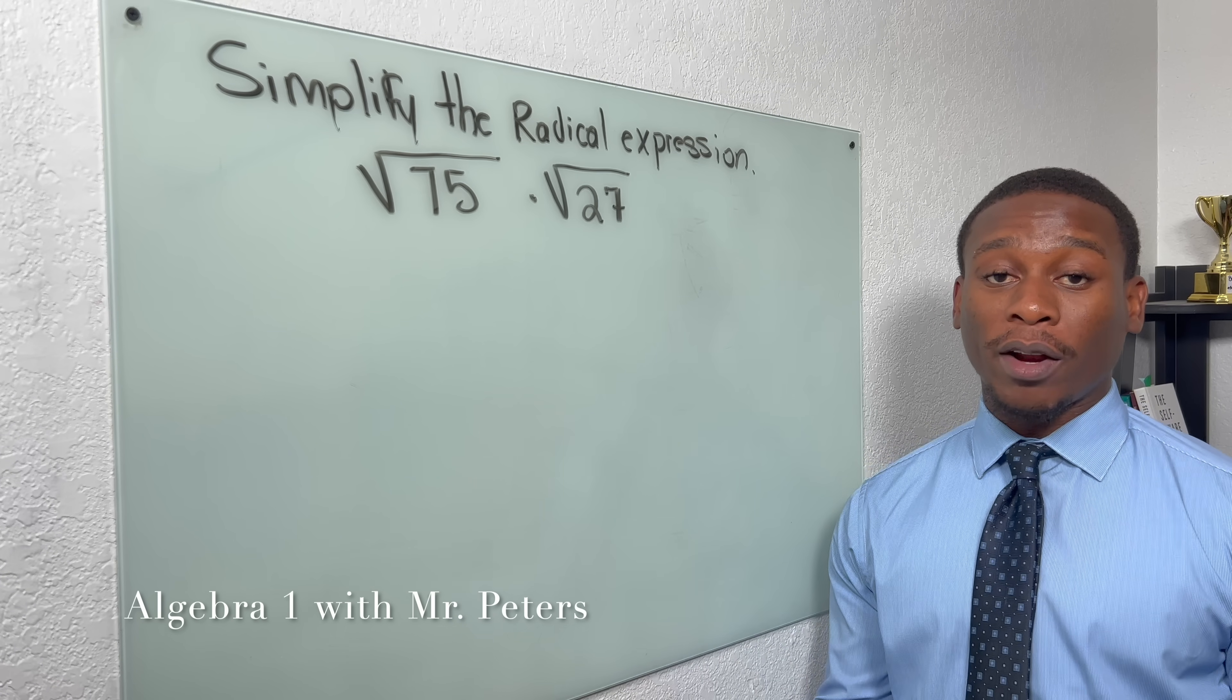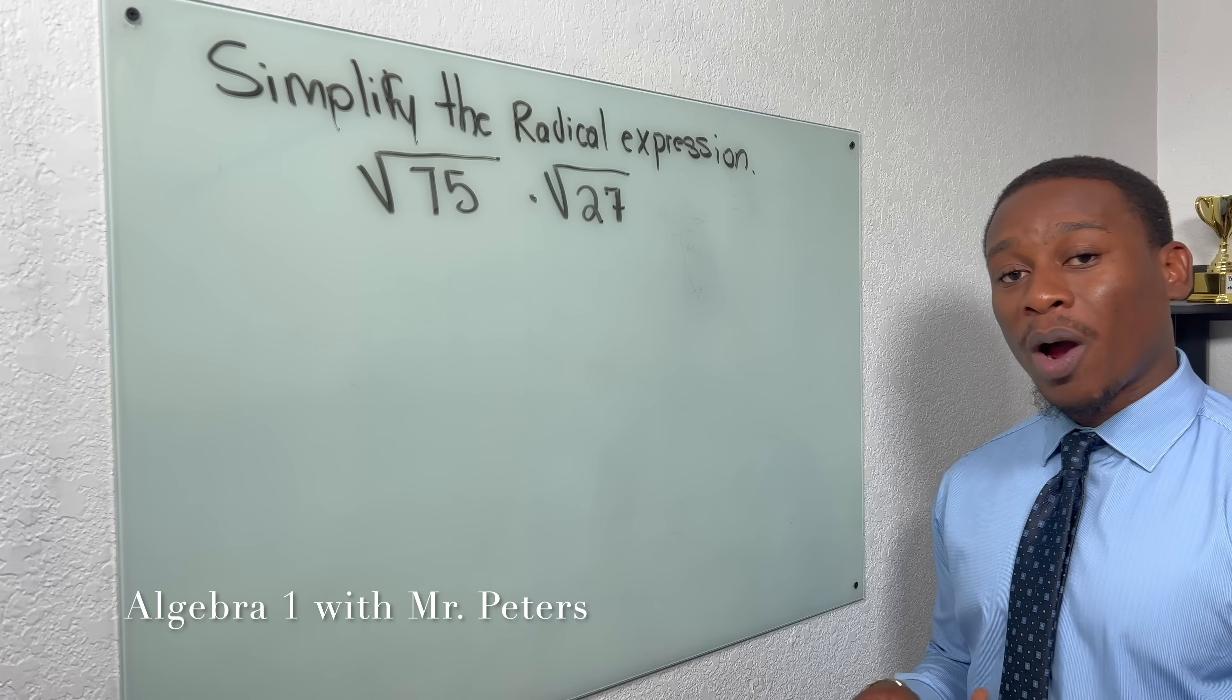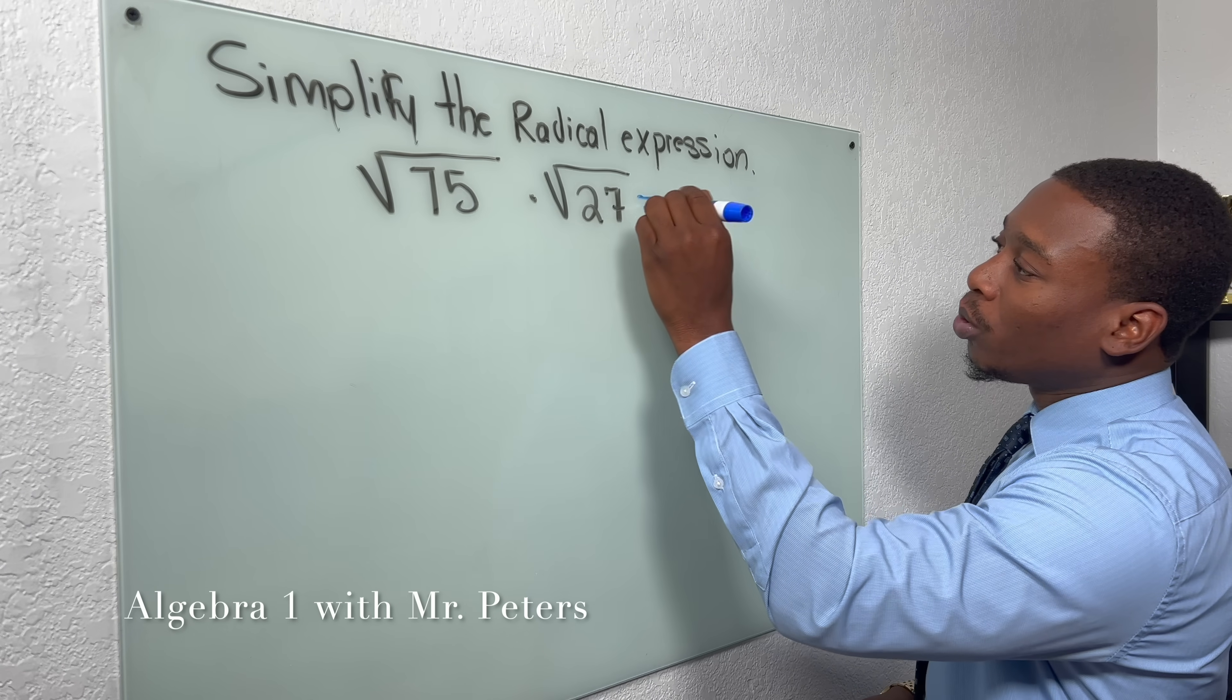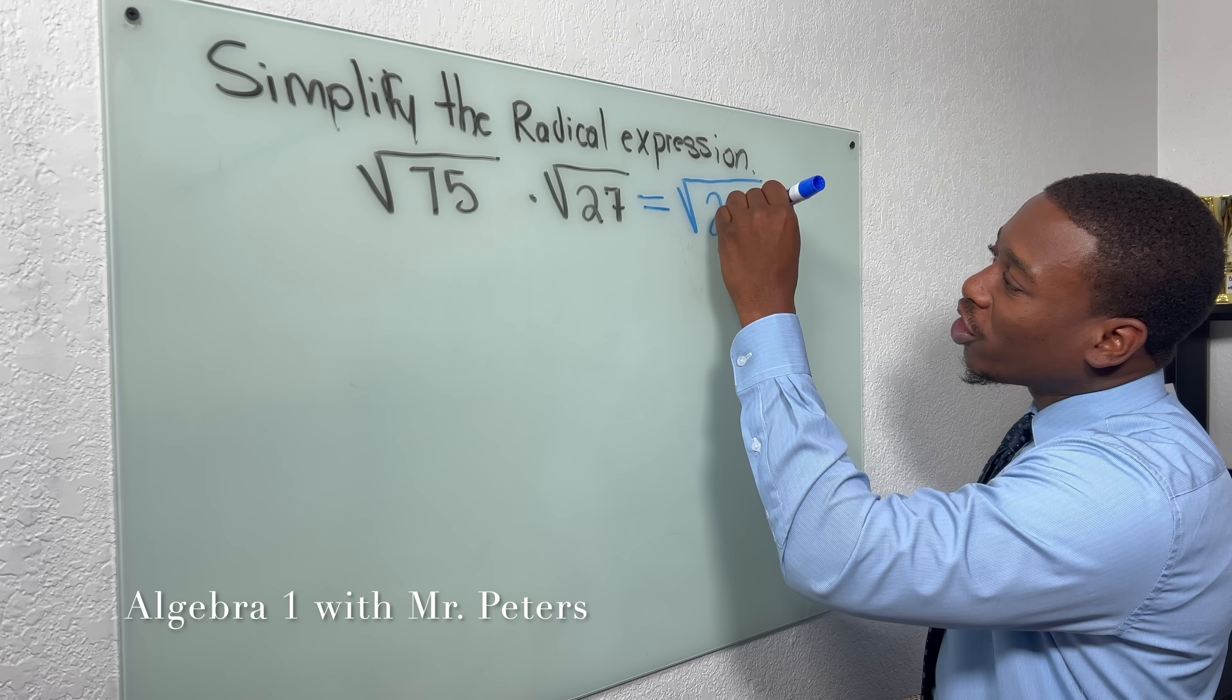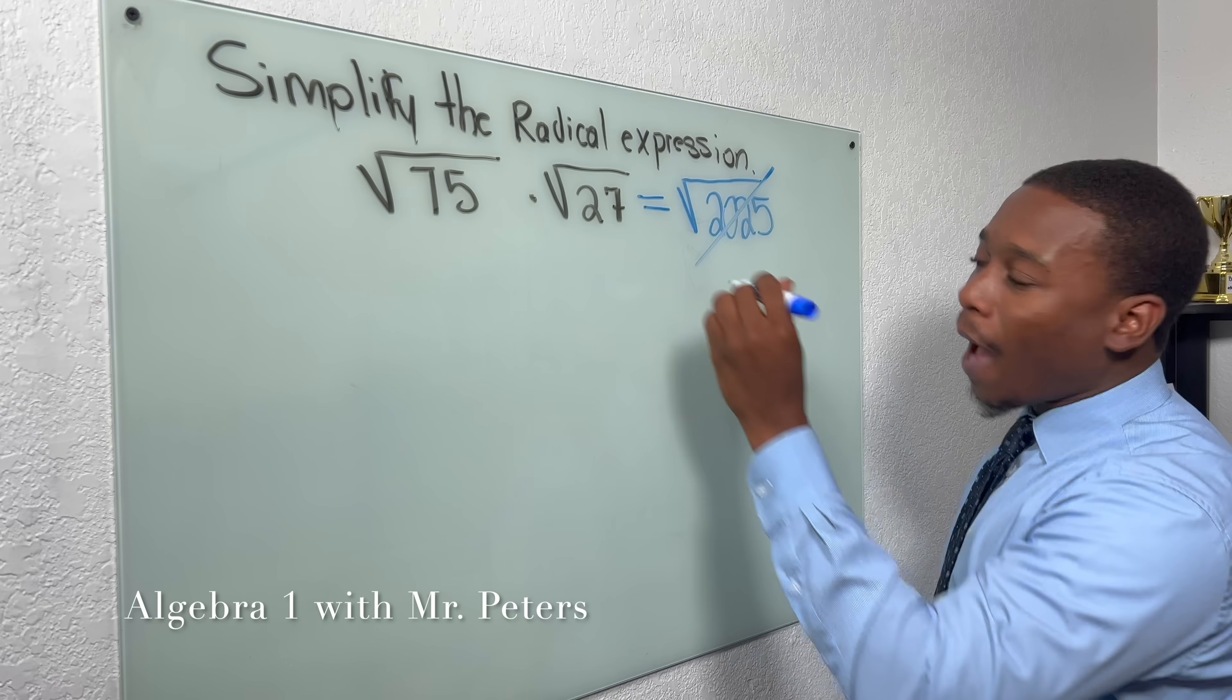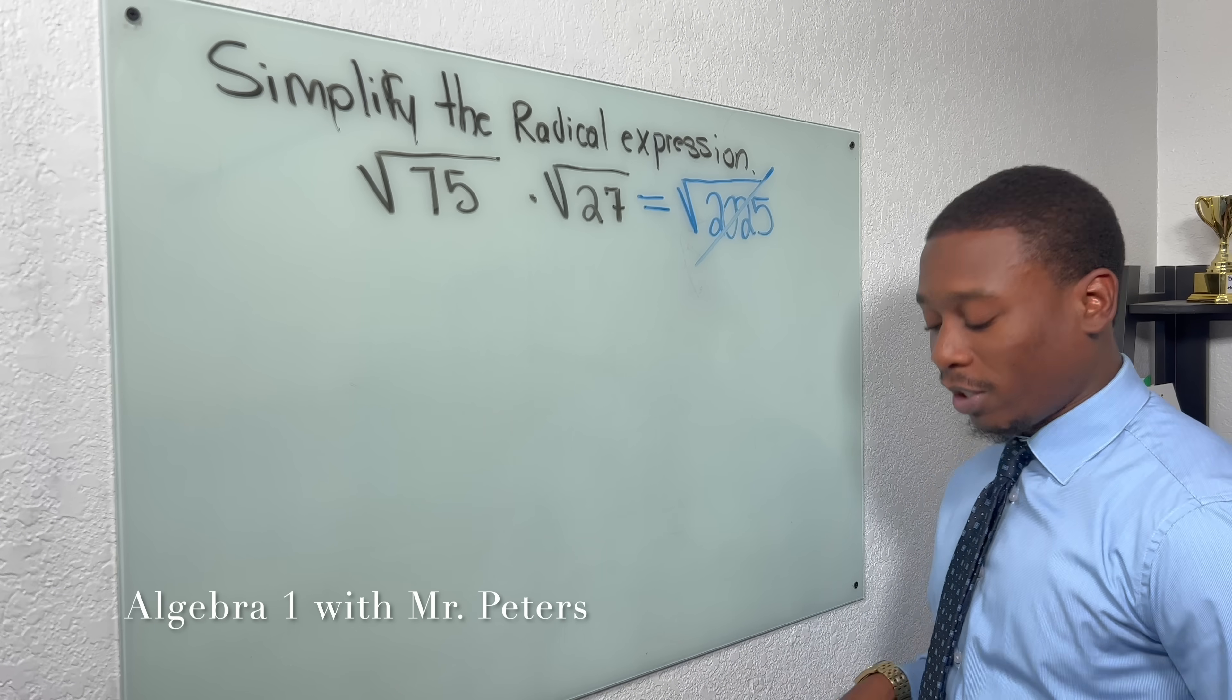So we're moving on to radicals now, guys. And they're asking us to simplify this expression. But I want to show you guys a very simple way to do this. So what students will do is they'll go through and multiply and get a large number, then try to simplify. But I don't think this is the best method, guys. Let's try something a little bit more simpler instead.